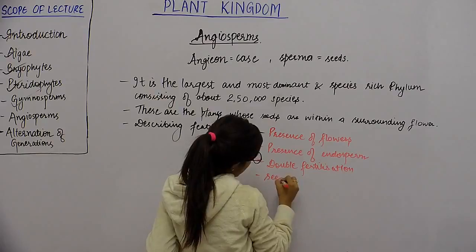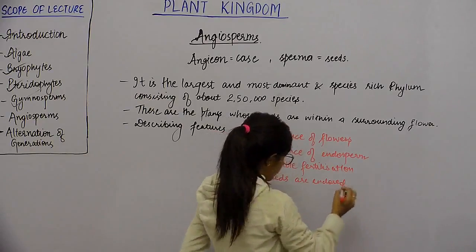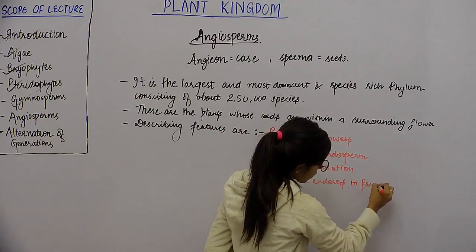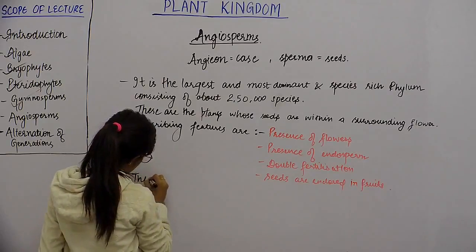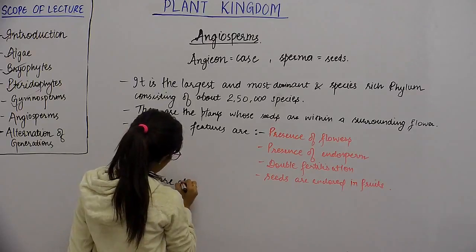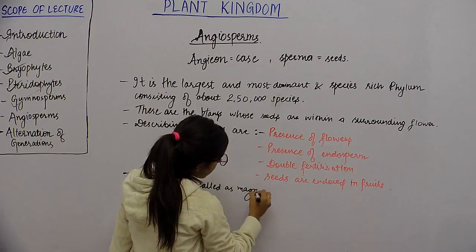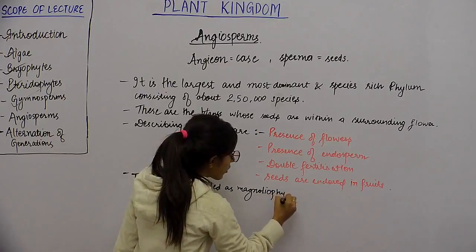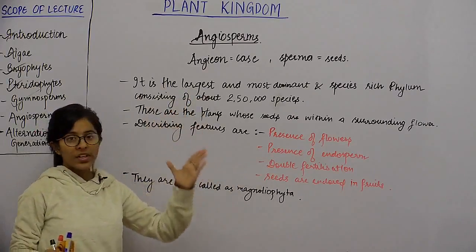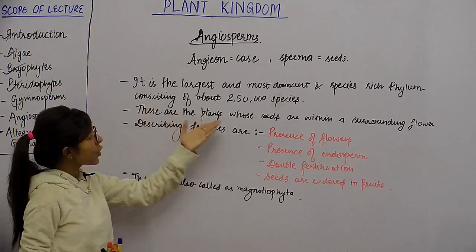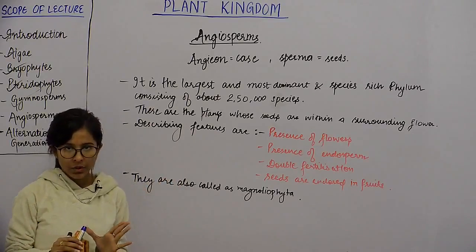Seeds are enclosed in fruits. They are also called by a common name for this phylum: Magnoliophyta. Angiosperm is the largest and most dominant and species-rich phylum, consisting of about 250,000 species — the biggest phylum in the whole plant kingdom.